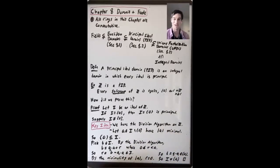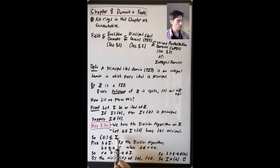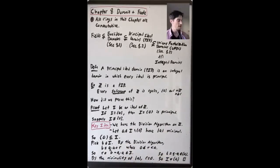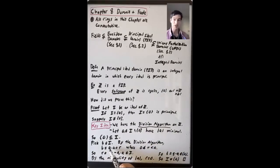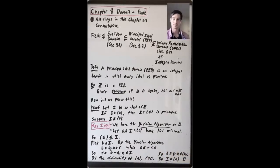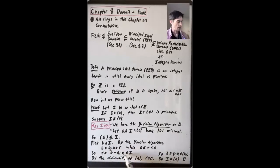We know how absolute values work in Z: if you have a non-zero integer, there are exactly two things, A and negative A, that have the same absolute value. To show inclusion the other way, pick an arbitrary element B in I and apply the division algorithm. It tells us we can write B as some integer Q times A plus R, where 0 ≤ R < |A|. If B is in I and A is in I, then Q times A is in I, so B minus Q times A equals R is also in I.